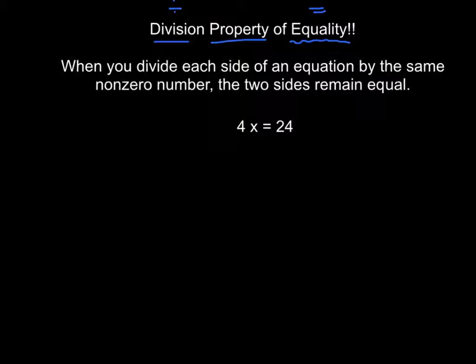Here's the division property. When you divide each side, so if we have an equation, we have one side of an equation and the other side of the equation. So we're dividing both sides of the equation, this one and this one, of an equation by the same nonzero. Mainly because if we divide by zero, we will get an undefined answer.